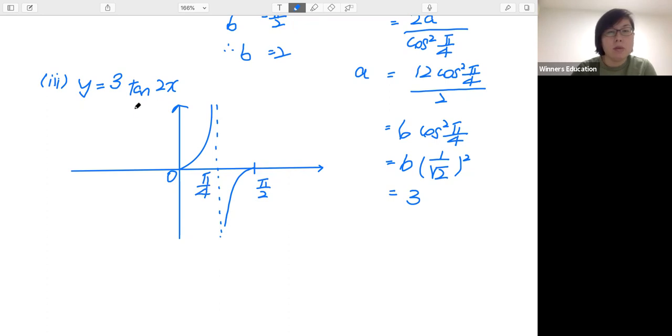And then we need to do the same. So this is negative π/4. Alright. So the graph continues this way. One cycle.